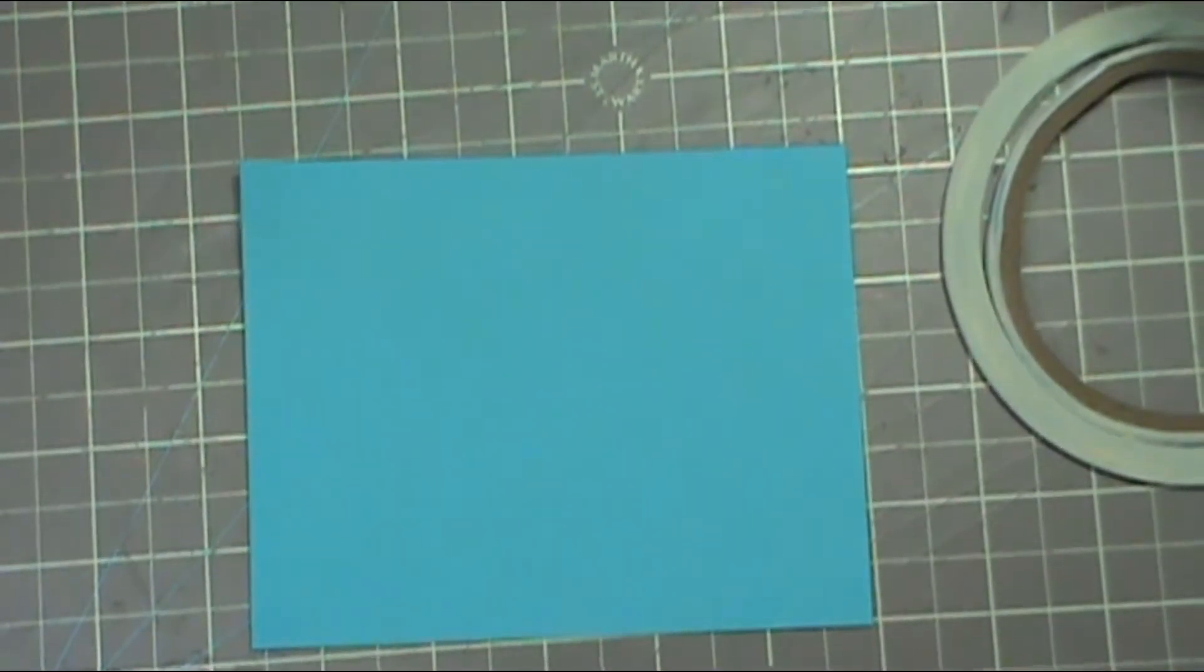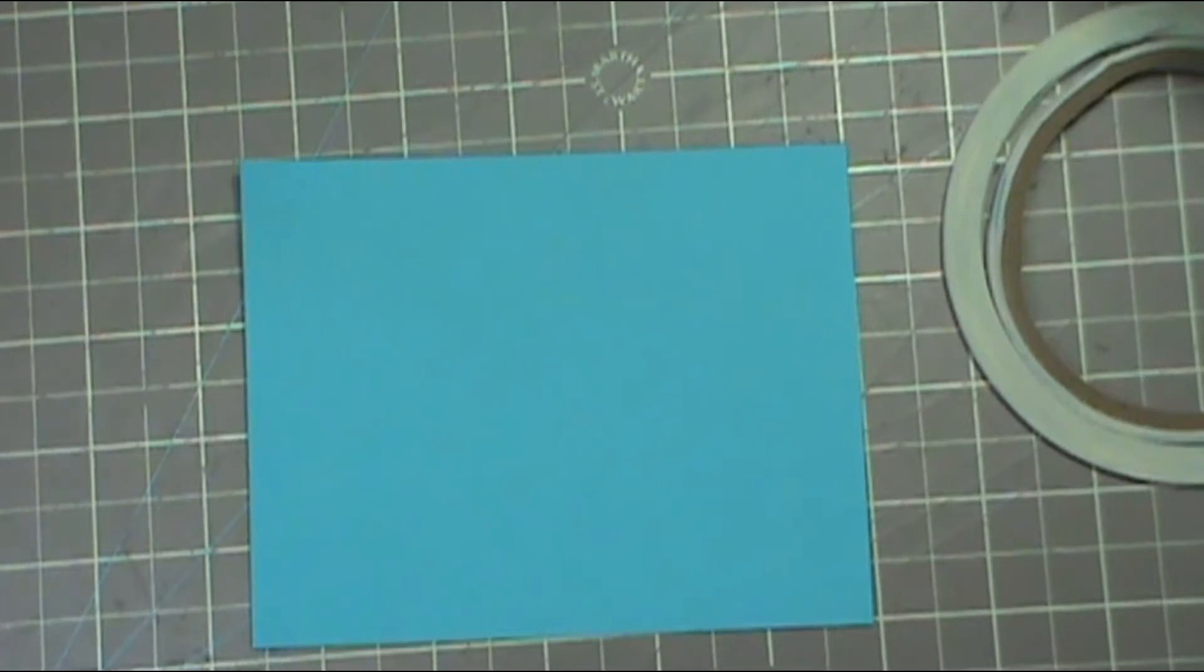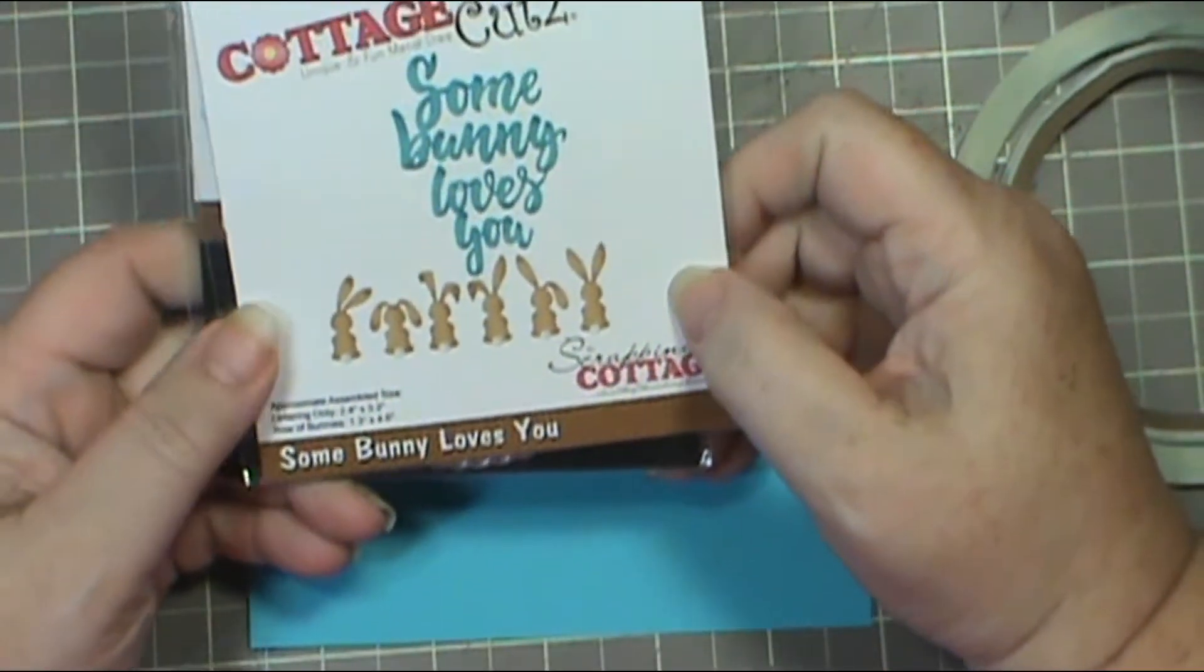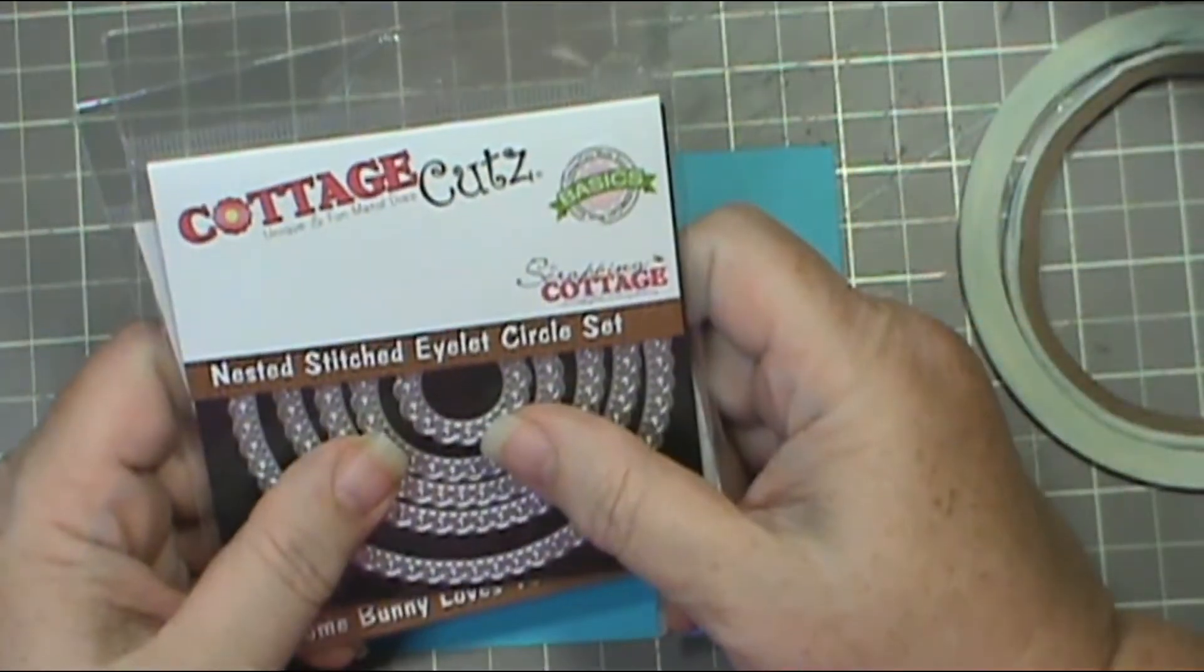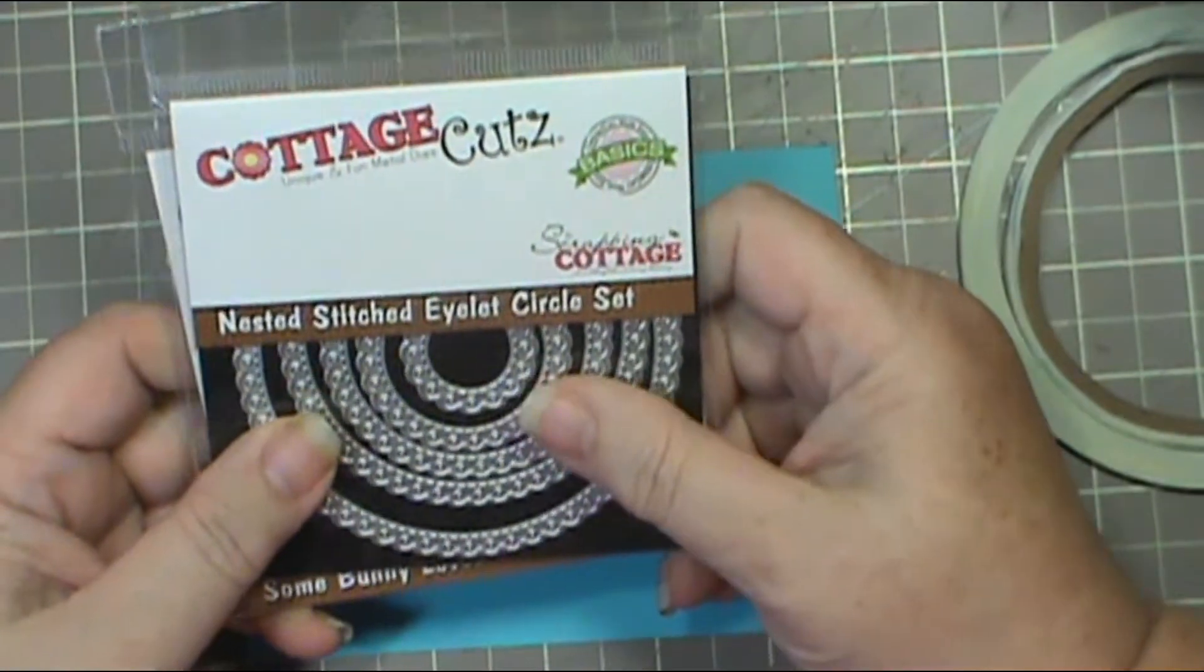Hey everybody, this is Sherry with CPR Craft Pray Repeat, and I'm here today with a project for Cottage Cuts. I'm going to start by showing you what dies I used. I use this Some Bunny Loves You set with the different bunnies here, and then I use the nested stitched eyelet circle set.